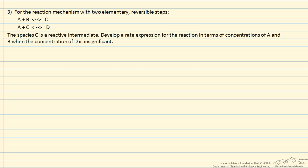This problem gives us a reaction mechanism with two steps: A plus B goes to C, D, and then A plus C reacts to D. The important aspect here is that C is a reactive intermediate. So we want to develop a rate expression that would have concentrations of A and B, but not C. We're saying the concentration of D is insignificant. What we can do is apply the steady state approximation to the species C. We can say that the rate of formation of C is zero.